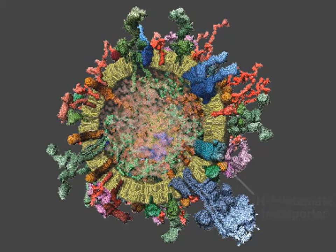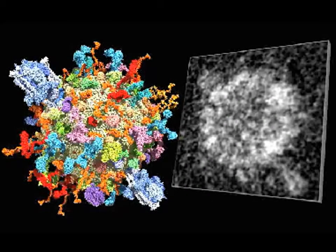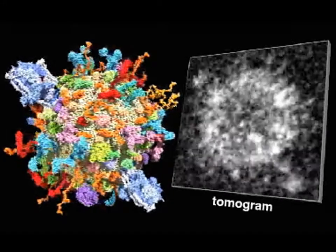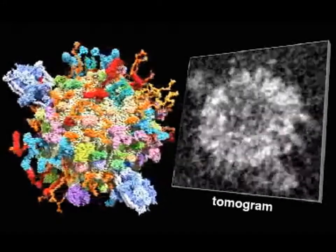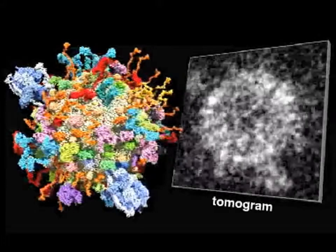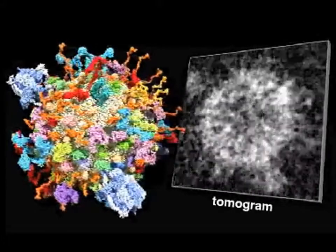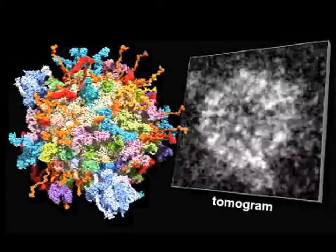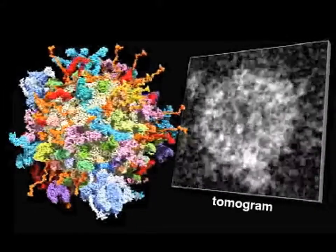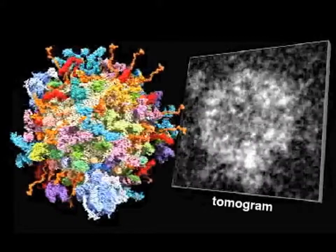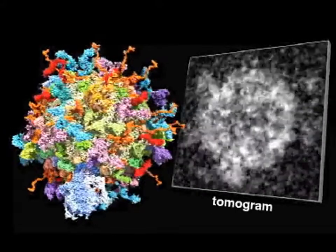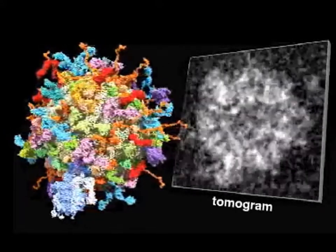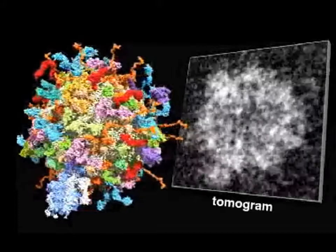This model was created in part from an electron tomogram of a real synaptic vesicle. The tomogram combines visual slices of the vesicle at various angles to create a unified image. Other data, including structural data of the synaptic vesicle's proteins, have been combined with the data from the tomogram to create the three-dimensional model on the left.